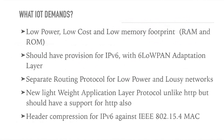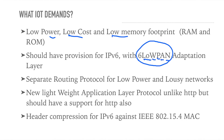What does IoT demand? IoT demands low power, low cost, and low memory footprint — RAM and ROM will be very limited in size, so you don't need huge amounts of RAM or read-only memory. It should have provision for IPv6 with the 6LoWPAN adaptation layer. 6LoWPAN stands for: '6' for IPv6, 'LO' for low power, and 'WAN' for wireless personal area networks.